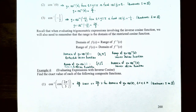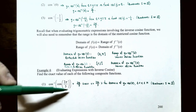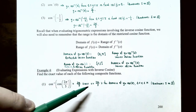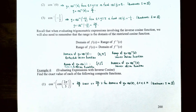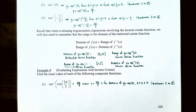Example four: evaluating expressions with inverse cosine. Number one: cos⁻¹(cos(2π/3)). Since 2π/3 is in quadrant 2 and is between 0 and π, it is in the domain of the restricted cosine function. So inverse cosine and cosine cancel each other out, giving 2π/3.